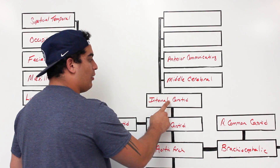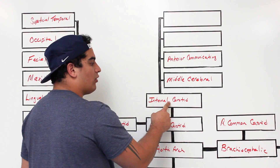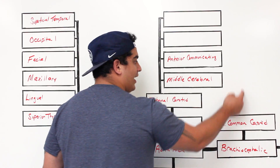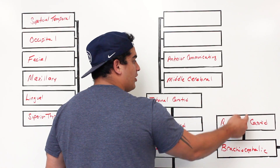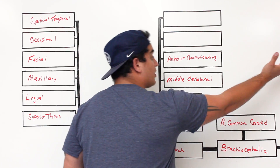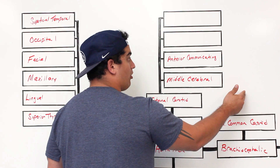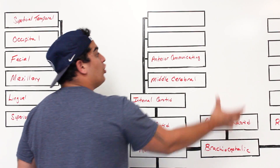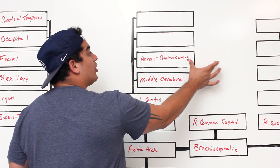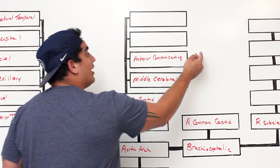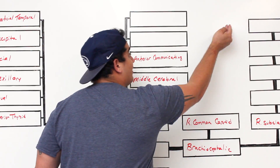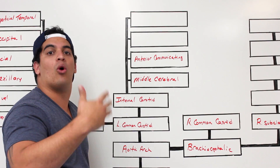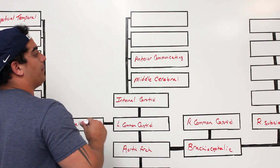The right common carotid also splits into external and internal. The right internal carotid artery similarly gives off a middle cerebral artery and an anterior communicating branch. When these anterior communicating branches from both sides come together, they give off the anterior cerebral arteries. We'll cover the Circle of Willis in more detail in a separate diagram.